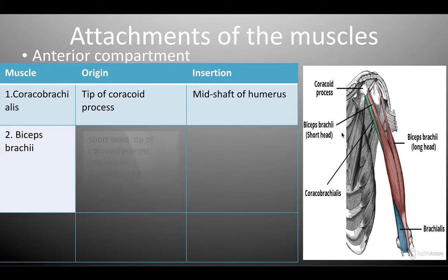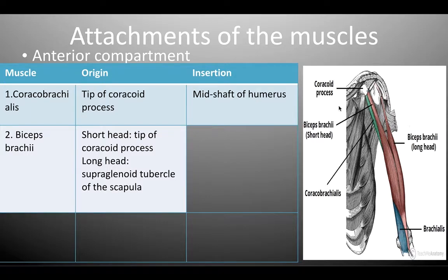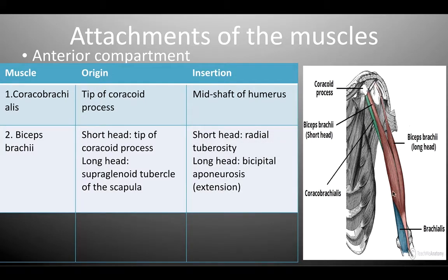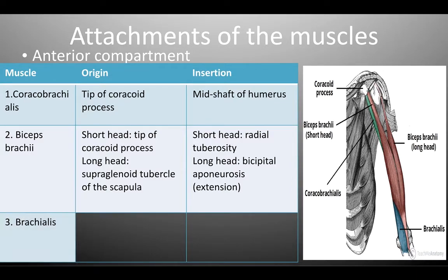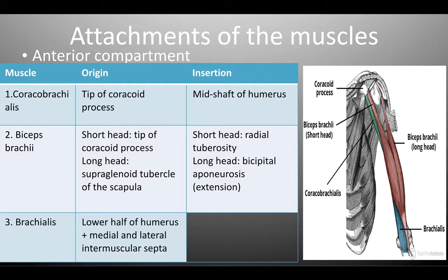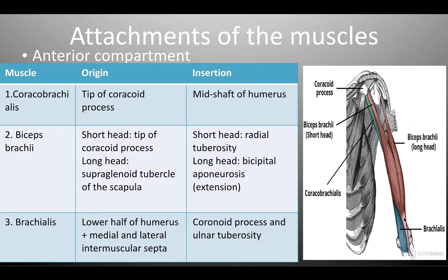The biceps brachii has two heads: the short head and the long head. The short head originates from the tip of the coracoid process along with the coracobrachialis, and the long head originates from the supraglenoid tubercle of the scapula. The short head inserts into the radial tuberosity, while the long head extends into the forearm as the bicipital aponeurosis, which separates the brachial artery from the medial cubital vein. The brachialis originates from the lower half of the humerus and the medial and lateral intermuscular septum, inserting into the coronoid process and the ulnar tuberosity.